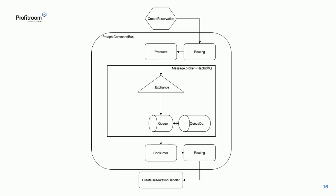Jak wygląda to na wykresie? Mamy komand create reservation, który wpada do proofowego command busa. Command jest routowany do producera, który publikuje komand na exchange'a. Trafia on do odpowiedniej kolejki. Command jest przechwytywany przez konsumera, routingiem kierowany do handlera. Gdy zostanie poprawnie obsłużony, zwracana jest informacja do message brokera o sukcesie. Jeśli nie, informacja o błędzie trafia na tzw. kolejkę dead letter, która cyklicznie wrzuca komand z powrotem do zwykłej kolejki.